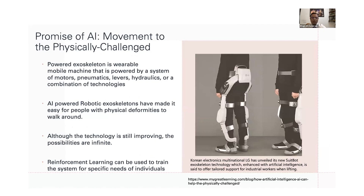For movement: providing mobility to the physically challenged. Earlier technologies were developed for soldiers, but using them for the differently abled is a new area. Powered exoskeletons are wearable machines that help people with physical challenges to move. AI-powered robotic exoskeletons have made it easier for people with physical deformities to walk. Technology is still improving but possibilities are infinite — using AI reinforcement learning, systems can be trained for specific individual needs and particular activities.